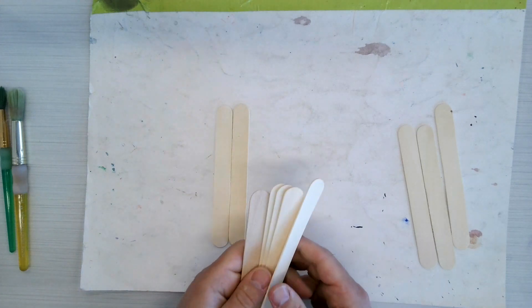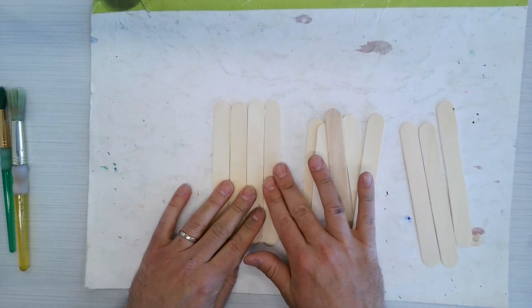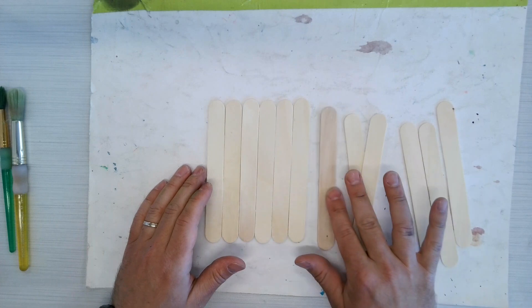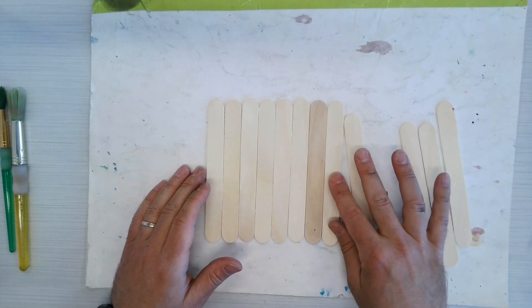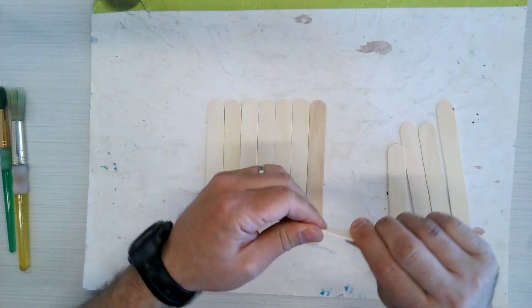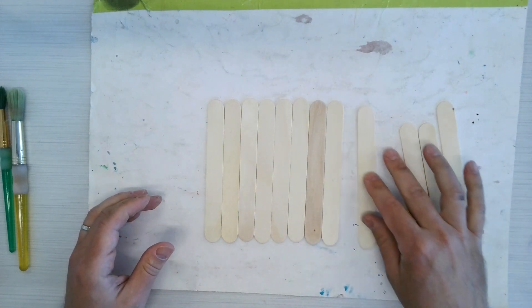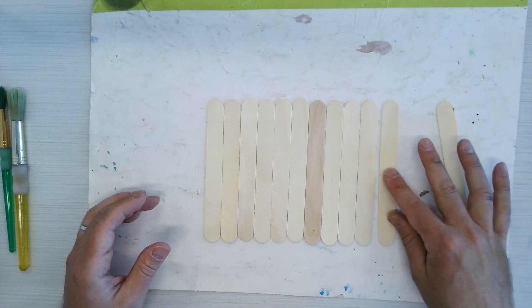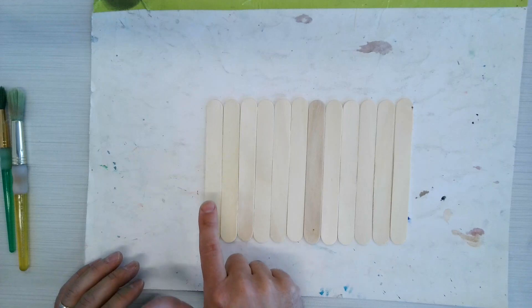You're going to start off by getting 14 sticks, and you're going to line them up right next to each other. Now, when you do this, there might be some sticks that are not flat, and so you could either try to bend them, like this one's not perfectly flat, so I can try to bend it a little bit, or you could just go grab a different one. That's your two options for that, because there are a few that just aren't perfect. So I'm going to line up 12 here. I got 14, but I'm going to line up 12.